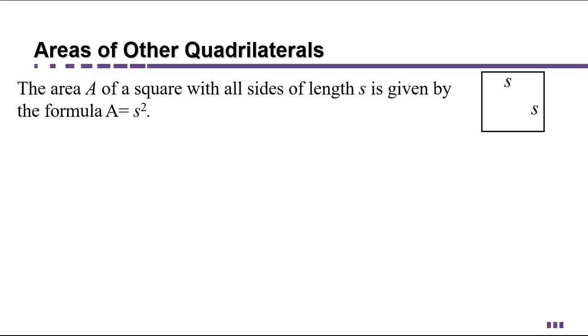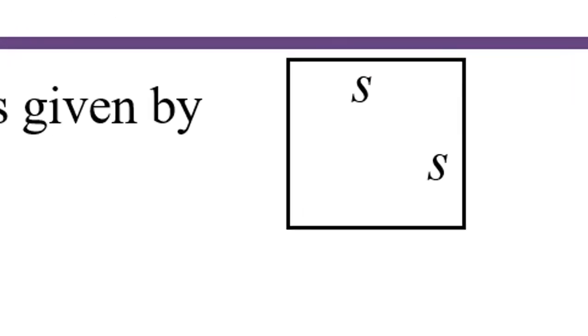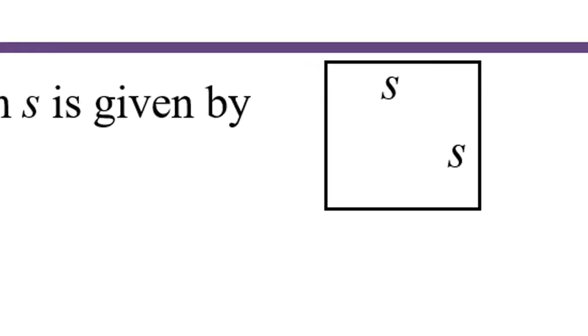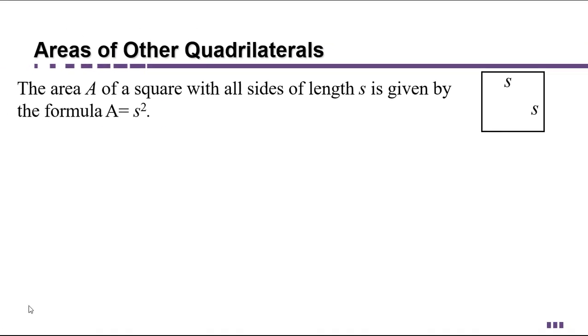So let's take what we know about finding the area of a rectangle and apply it to other quadrilaterals. For example, a square is just a special case of a rectangle where all the sides are the same length. So if you have a square with each side length s, then length times width is s times s, or s squared, which is the formula for the area of a square.